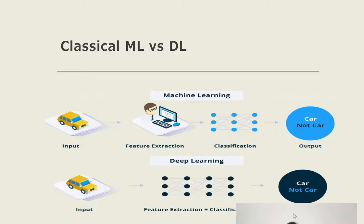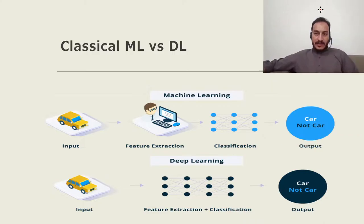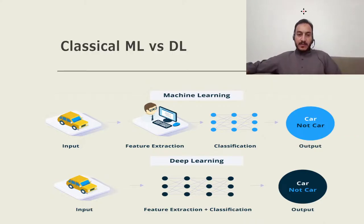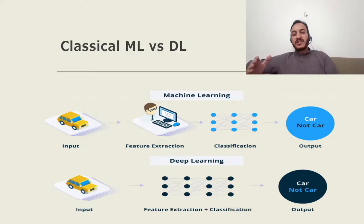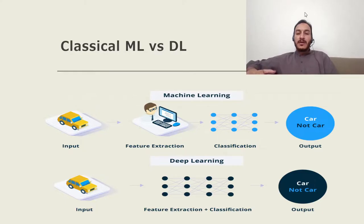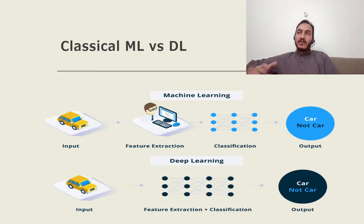Deep learning is different. In deep learning, the model itself will do the feature extraction and classification — or feature extraction plus regression. We don't need to do anything manually; we just feed the raw data, be it images, text, or whatever data you have.